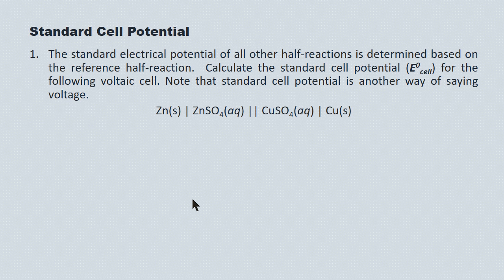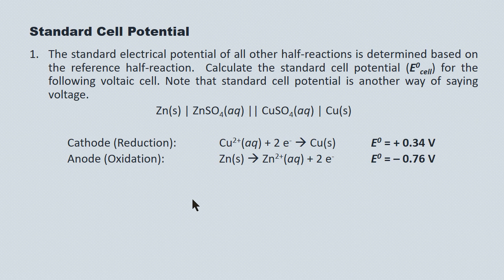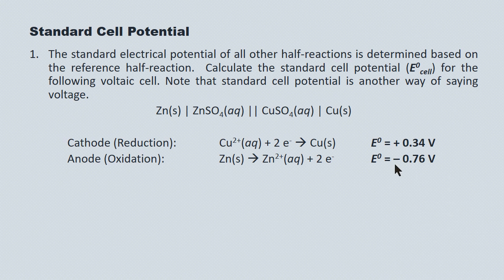For this particular system, we want to determine the potential difference between the cathode and the anode. Here's the cathodic reaction, taken from the data booklet — it has an electrical potential of positive 0.34 volts. The oxidation has an electrical potential of minus 0.76 volts. You'll notice I flipped the reaction — in the data booklet it's written as a reduction, but I've written it as an oxidation. What I have not done, though, is change the sign of its electrical potential, and that's important.